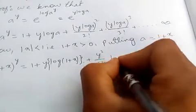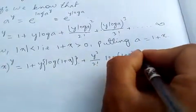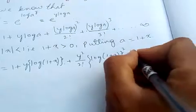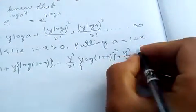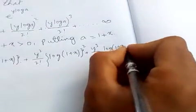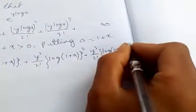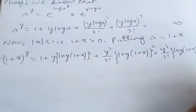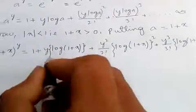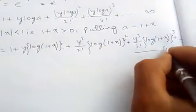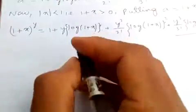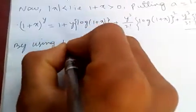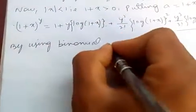(1 + x) to the power y equals one plus y·log(1 + x) plus y squared by two factorial times log(1 + x) squared, plus y cubed by three factorial times log(1 + x) cubed, plus and so on. Let's call this Equation 1.